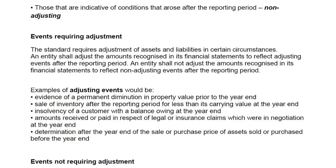Non-adjusting events are events the condition of which did not exist at the statement of financial position date — conditions that arose after the reporting period. Something that happened after the year end, say between 1st January 2019 and 31st March 2019, where the condition did not exist at 31st December 2018. Let's discuss examples of both adjusting and non-adjusting events.